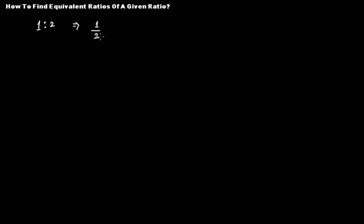If we have to find some equivalent ratios for this given ratio, what you have to do is simply multiply the top number and the bottom number by the same number and you'll get equivalent ratios. For example, if this is 1:2, multiply both by 2 — so 1×2 and 2×2 — and you get 2:4.